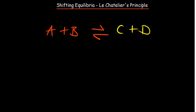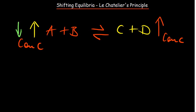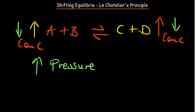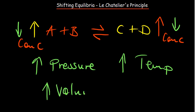Let's say we decide to increase the concentration of our reactants A and B — what happens if we decide to increase the concentration of either of the two? Or what would happen if we decide to increase the concentration of the products? What if we decide to reduce the concentration? Or what if we decide to increase the pressure of these gases, assuming these reactants or products are gases? What happens if we decide to increase the temperature or the volume?